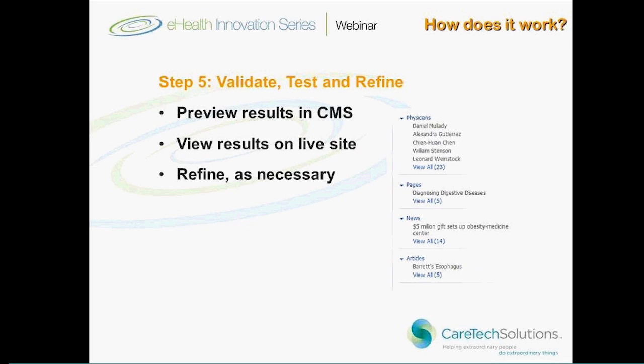And then finally, once you've rolled it out to your site, you can preview your results. If you're on CareWorks 4.0 and above, it's got a taxonomy preview feature, so you can go in and kind of see what impact the selections that you've made will have on what will appear on the page or content item you're working on.